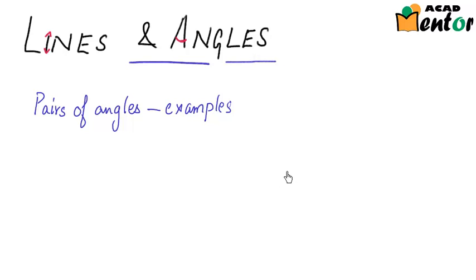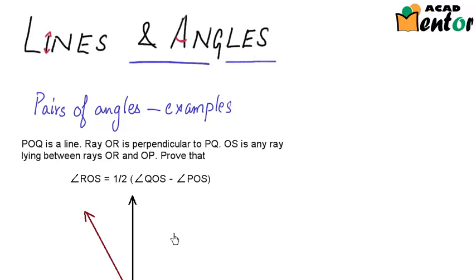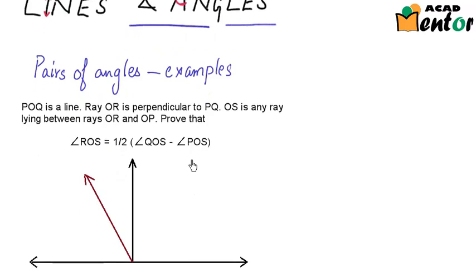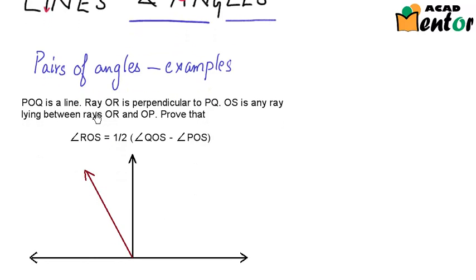We were talking about this chapter on Lines and Angles, and the concept we were discussing was Pairs of Angles. We will look at a couple more examples for this concept. The first question reads: POQ is a line, ray OR is perpendicular to PQ, and OS is any ray lying between rays OR and OP. Prove that angle ROS is half of angle QOS minus angle POS.